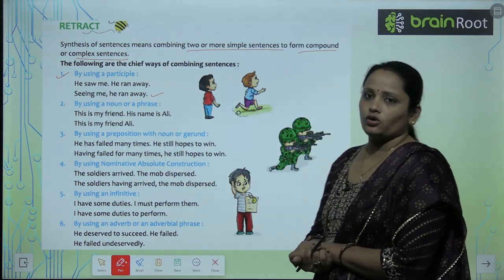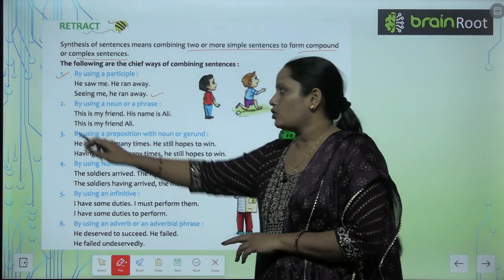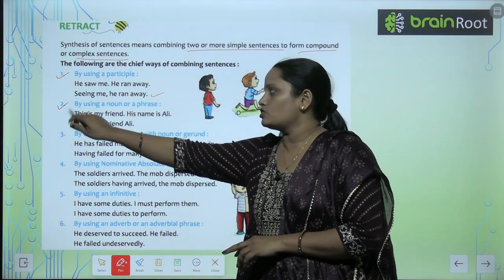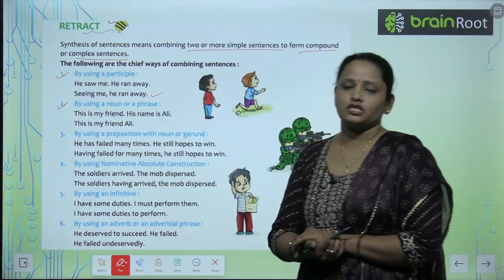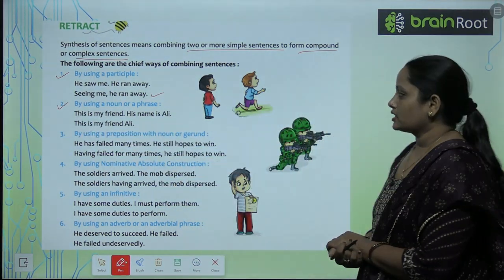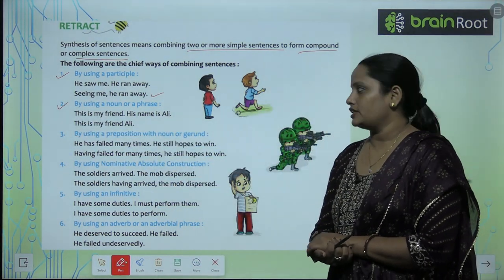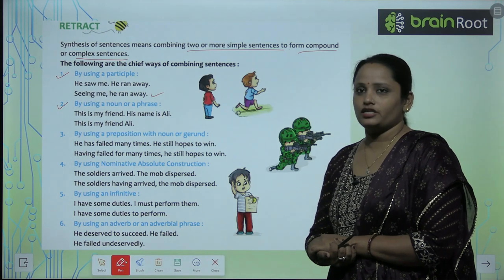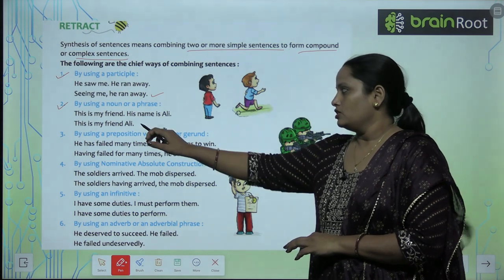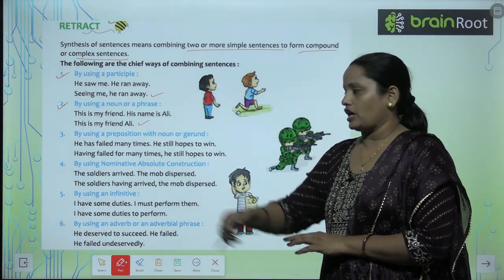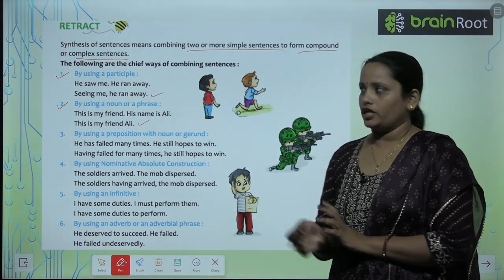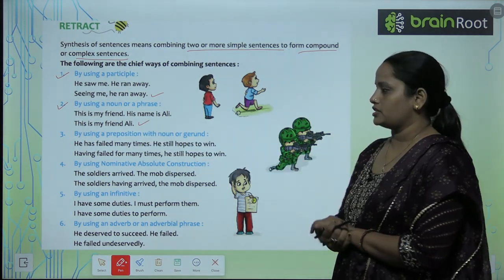The second way is by using a noun or a phrase. For example: 'This is my friend. His name is Ali.' becomes 'This is my friend Ali.' So we have made one sentence by joining the two.